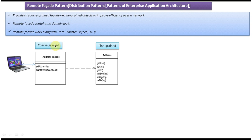Here you can see the client, and this is the coarse-grained address packet. It has two methods: get address data and set address data, with parameters like street, city, and zip. This is the fine-grained address object, which contains getter methods to get street, city, and zip, and also setter methods to set street, city, and zip.